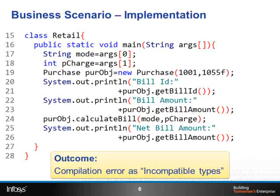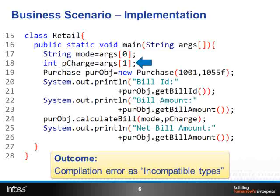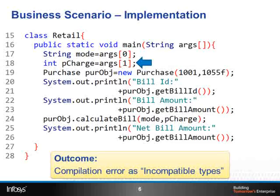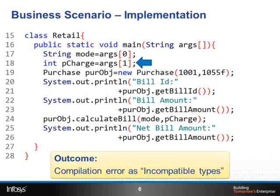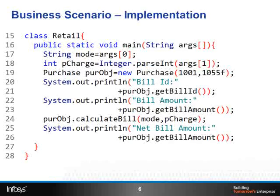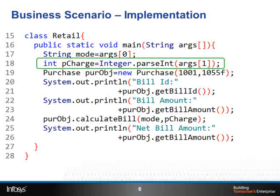When this program is executed, it results in a compilation error due to incompatible types. This is because the local variable pCharge is of type int, however the command line argument args[1] is a string. We cannot assign a string to an integer. To accept arguments of types other than string, this requires conversion of the string type to the appropriate type. This is done through predefined methods in Java. In the modified code, a predefined conversion method named Integer.parseInt is used to convert args[1] to integer before assigning to processing charge.